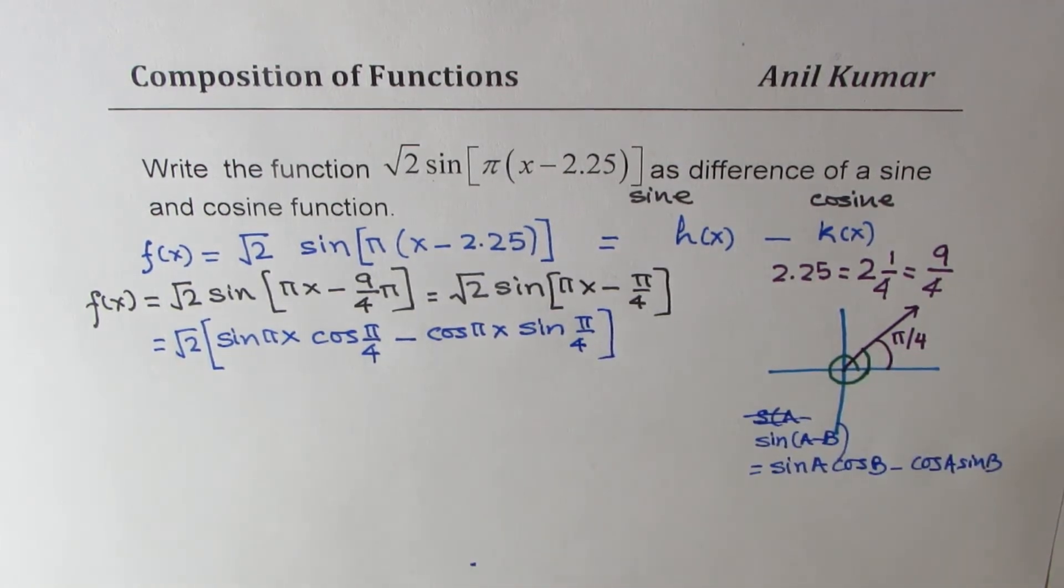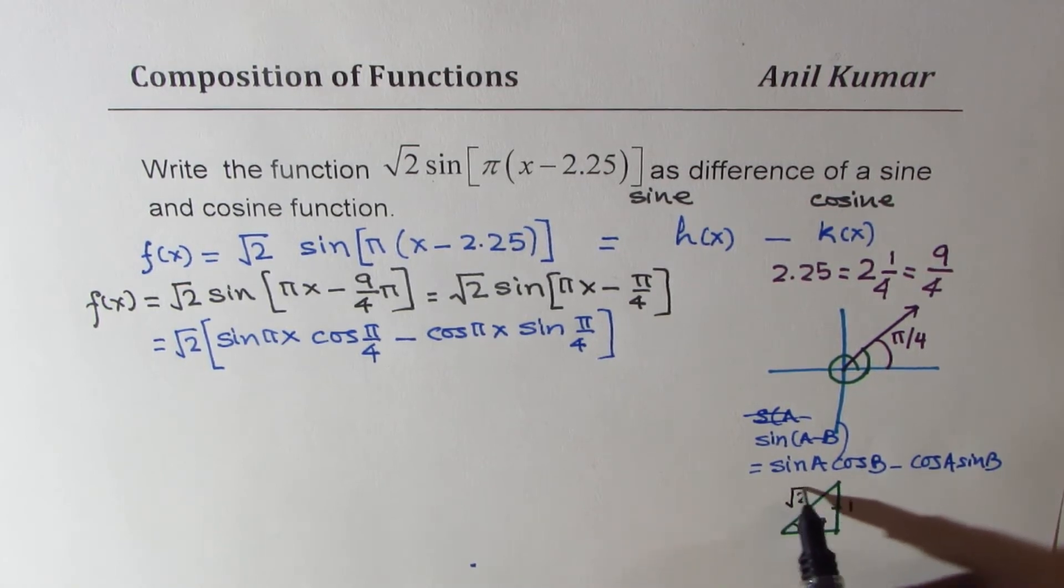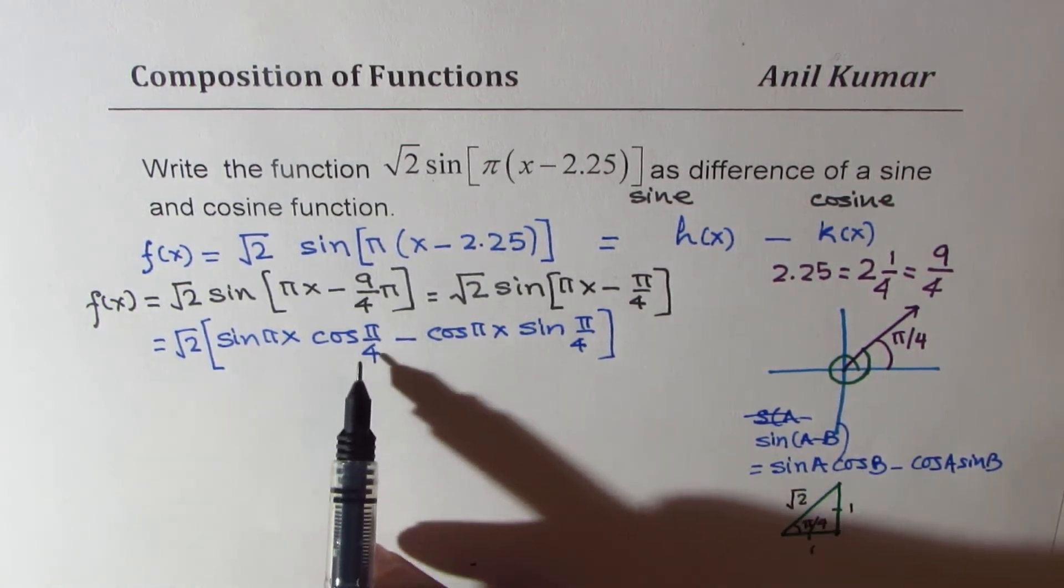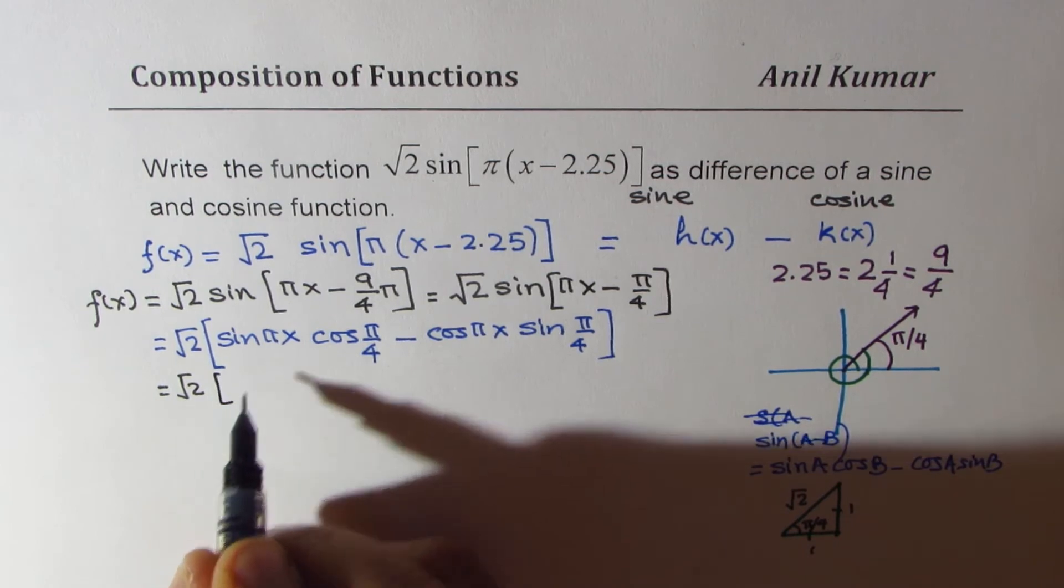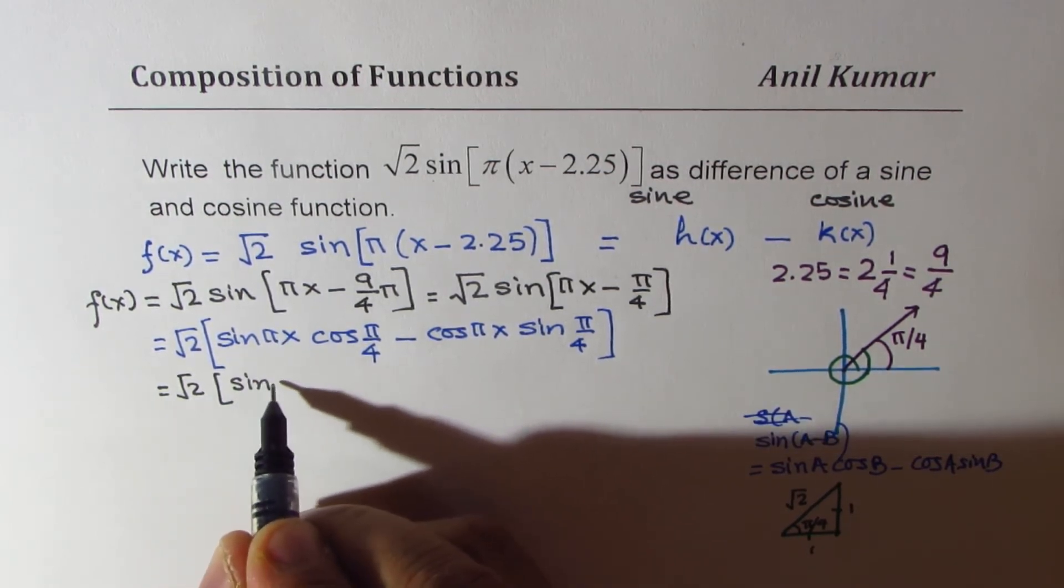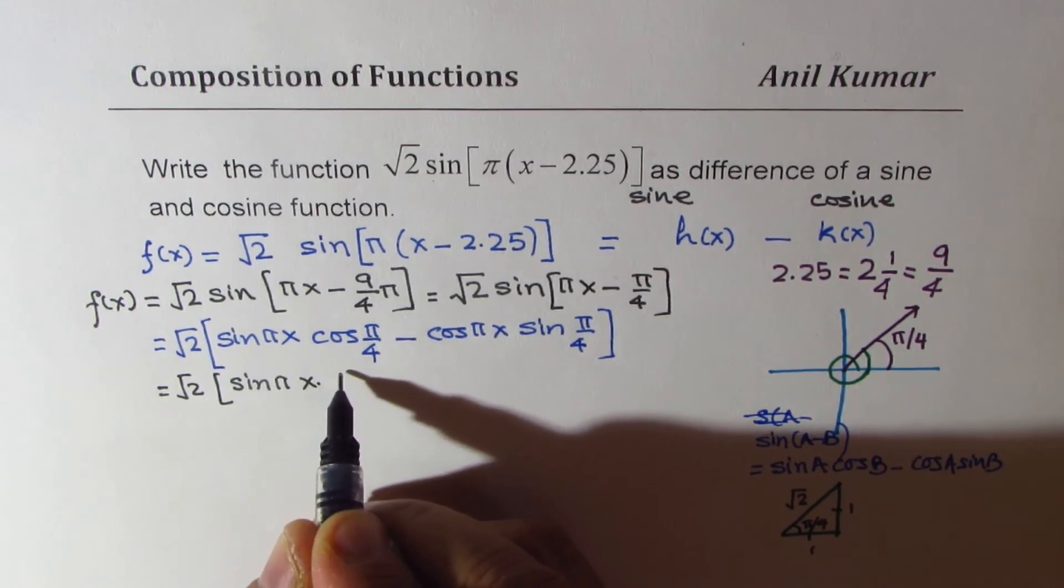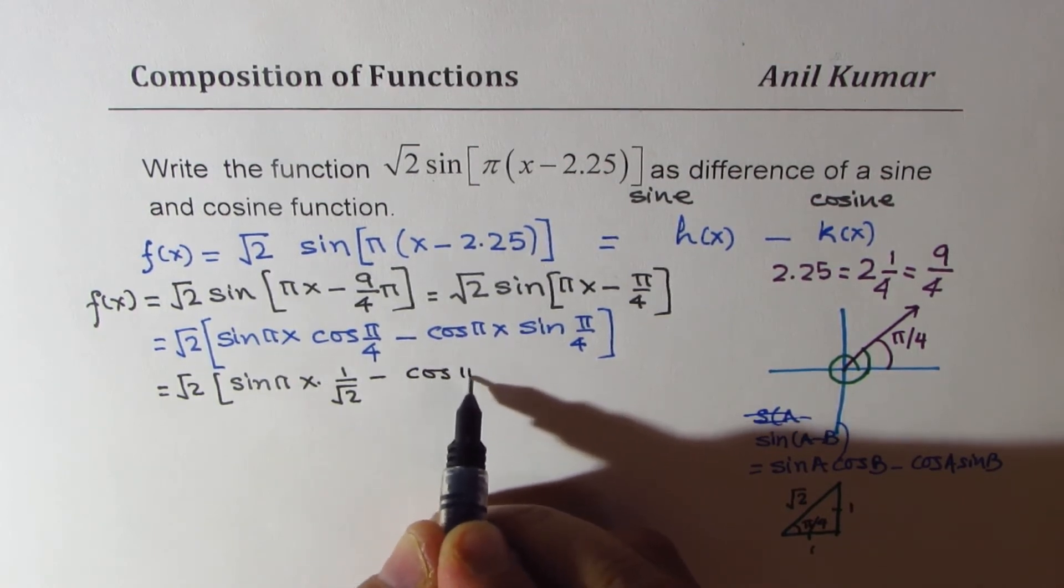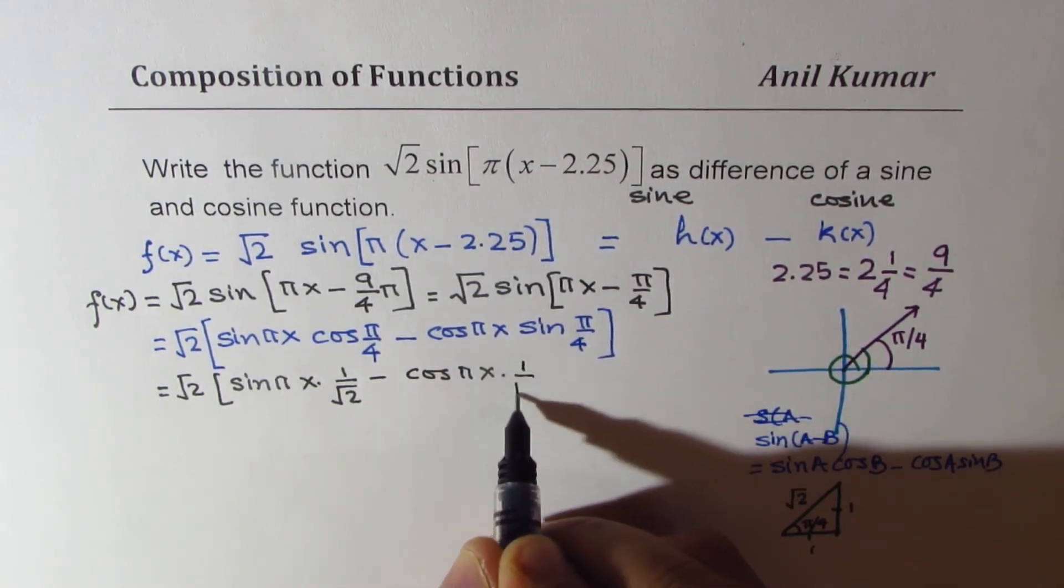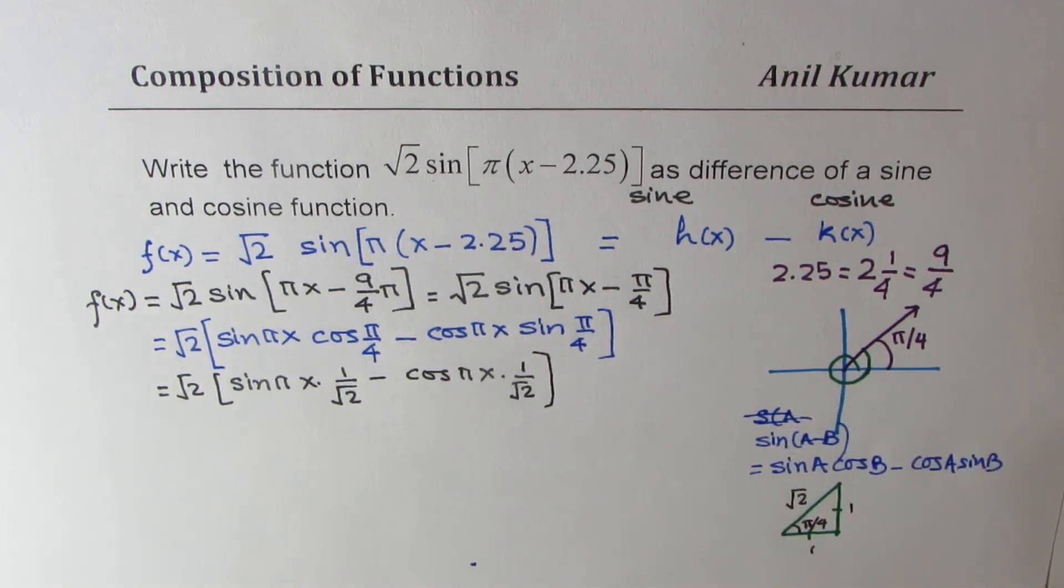Now what is sine pi by 4 and what is cos pi by 4? Well, let's look into our special triangle where two sides are equal. So you get the angle which is pi by 4, and the sides are 1, 1, and square root 2. So we could substitute this value. For cos pi by 4, 1 by square root 2. Sine also, it is 1 by square root 2. So what we get here is sine of pi x times 1 over square root 2 minus cos of pi x times 1 over square root 2.